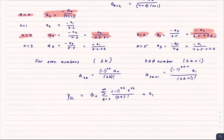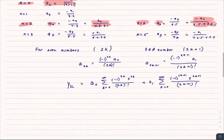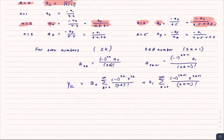plus a_1 summation from k equals 0 to infinity of negative 1 to the 2k plus 1, x to the 2k plus 1, divided by 2k plus 1 factorial. And that is the solution to my differential equation.